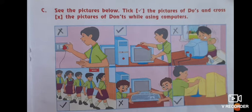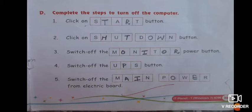Now D, complete the steps to turn off the computer, and children this is very important. This is very very important. So first step is click on dash button, so start button. Some letters are missing, S is written so you have to write T and R, so that is start.